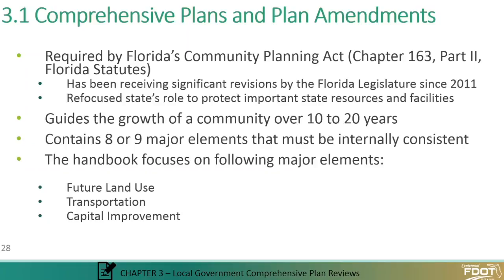In general, there is a bare minimum of eight major elements for inland counties in their comprehensive plans, and nine major elements for coastal counties. That's because there's an extra element called the coastal management element required for counties along the coast. All elements within a comprehensive plan are required by state law to be internally consistent with each other, as well as consistent with specific statutes identified in the handbook under Chapter 163, Part 2, Florida Statute. Of the major elements, we're going to focus on three throughout this entire presentation: the future land use element, the transportation element, and the capital improvements element.